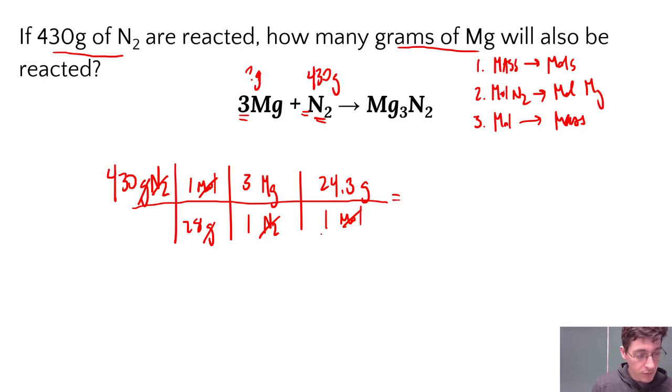So I'm going to do 430 times 1 just to keep, it's redundant, you don't have to, but to keep track of where you are. I'm going to then divide that by 28. Then I'm going to multiply that by 3, divide by 1, and multiply that by 24.3. And we end up with our same answer from the last video. If you go back, it is 1119.5. This is grams of magnesium.